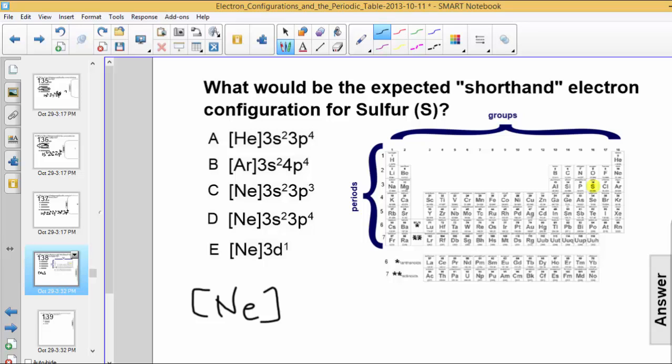We go to the next level, or actually the level where sulfur is, and that's the third level. So we go to the 3s sublevel as the first place we put in electrons after we write neon. We put a total of 2 electrons there, because right now we don't have enough. We're only at 12.